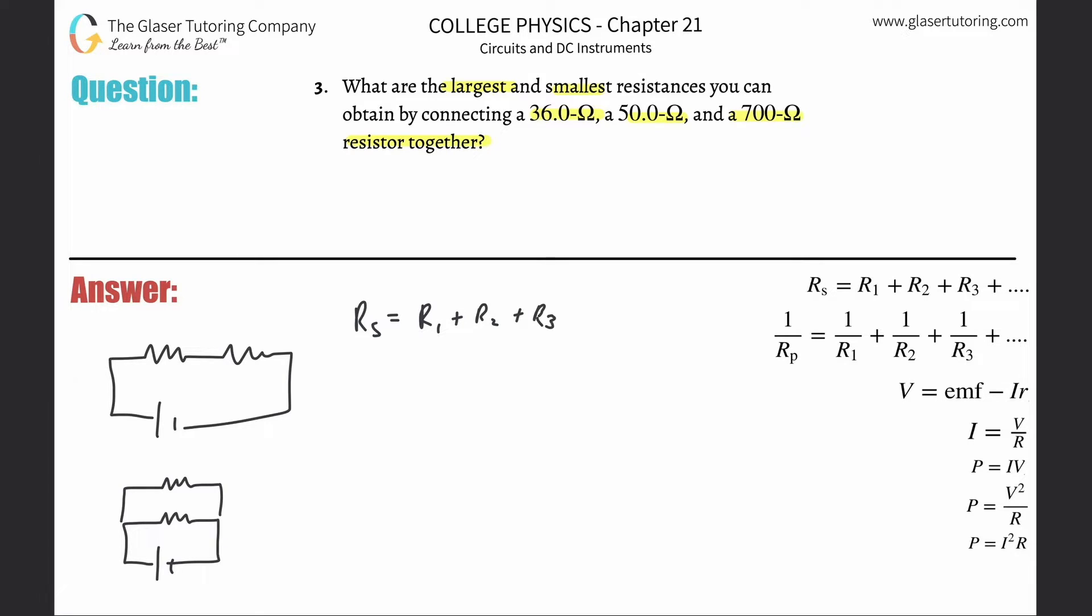So the first is going to be 36, the second is 50, and the one after that is 700. Make sure you got consistent units - they all better be in ohms. If they were in kilo ohms or milli ohms, you got to make sure you got all the same units there to add them together.